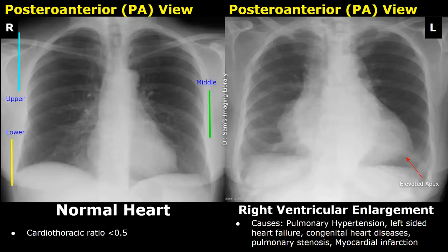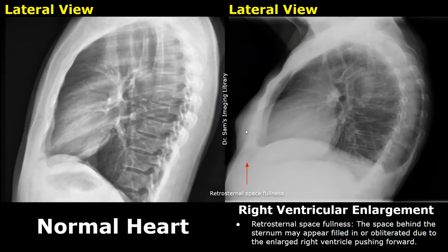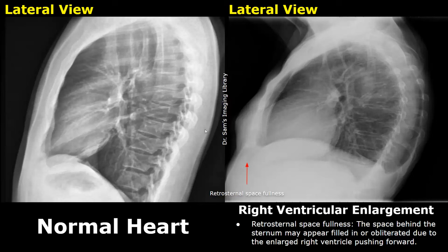Another feature seen in a lateral view is retrosternal space fullness. The space behind the sternum appears to be filled in or obliterated due to the enlarged right ventricle pushing forward — this region is bright or opacified. Whereas in the normal image we see a darker area here, as this space is not occupied by the heart.